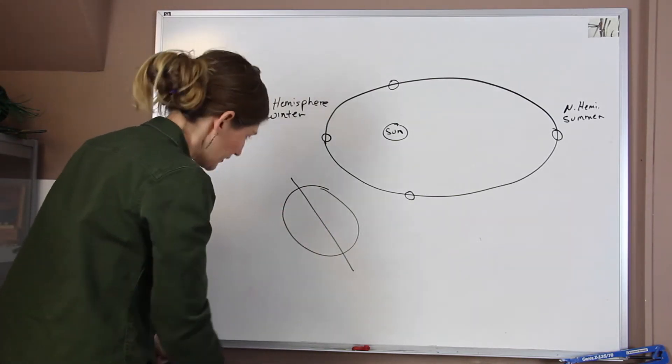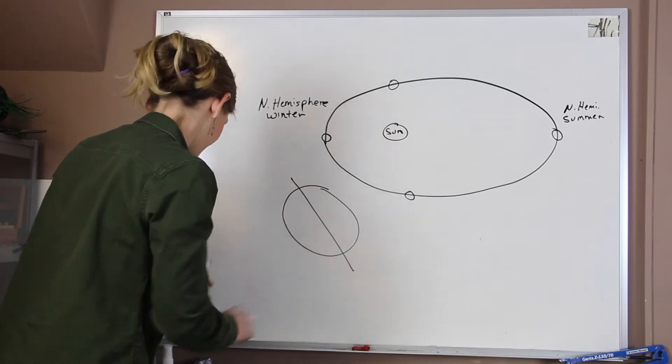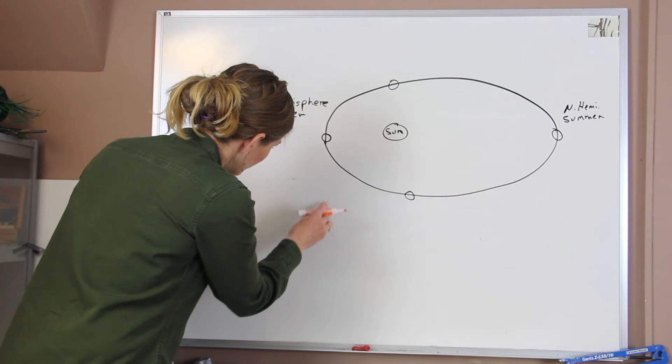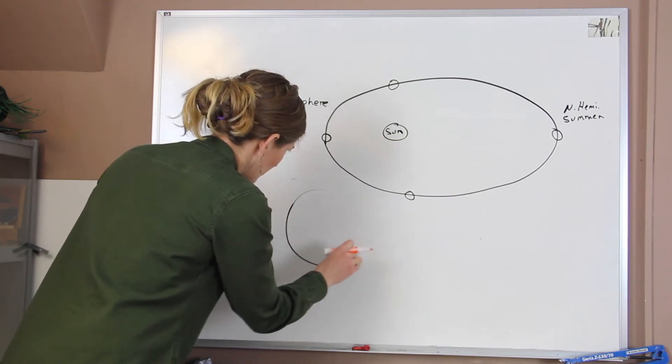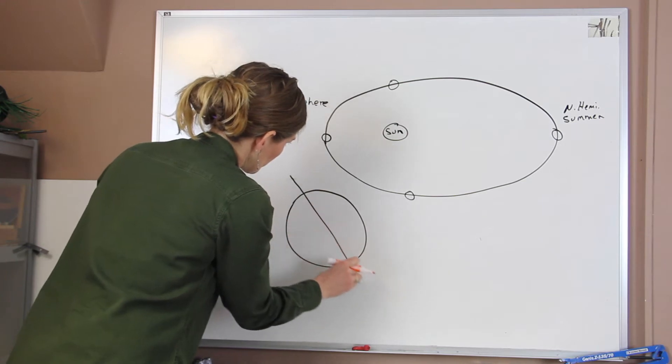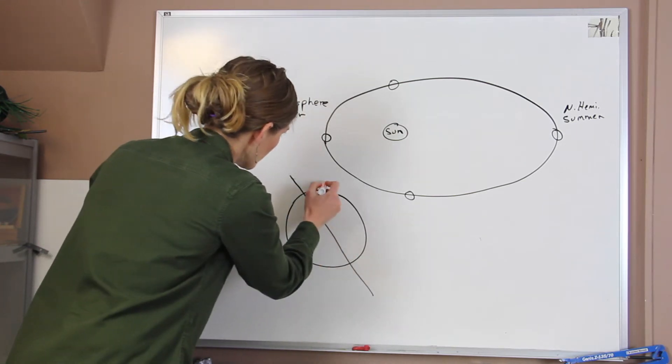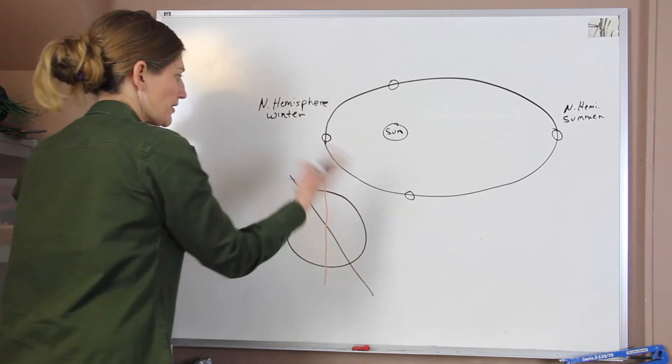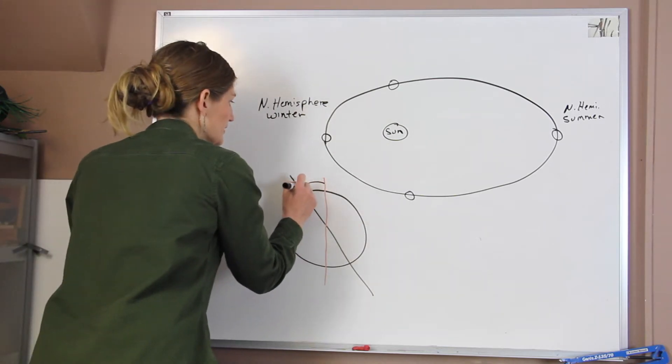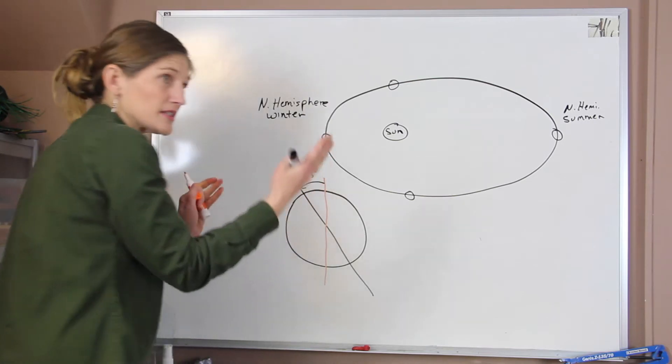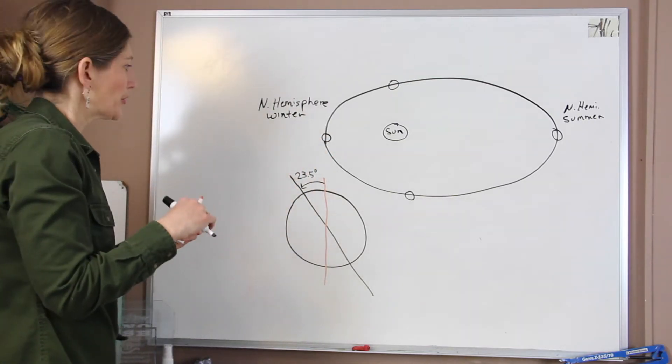If you were to draw a line, and if my Earth were round, let me try that again, see if I can draw. Okay. Okay, so if we were to draw a vertical line, what we find out is that our Earth is tilted on its axis at 23.5 degrees. So it's 23 and a half degrees off from normal.